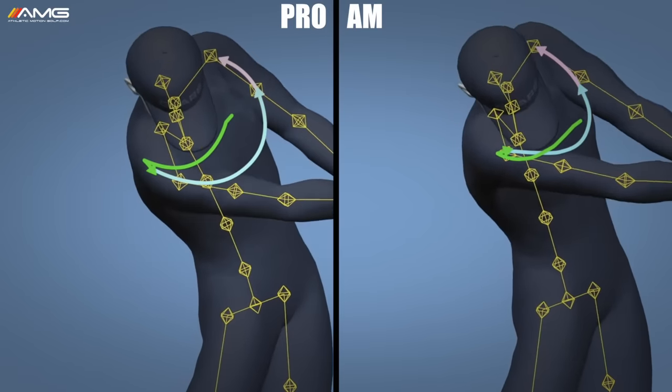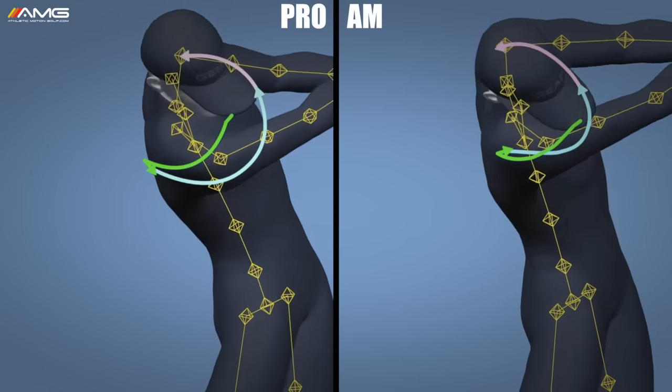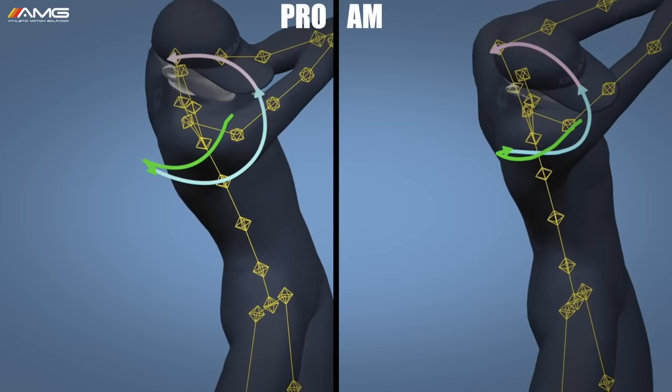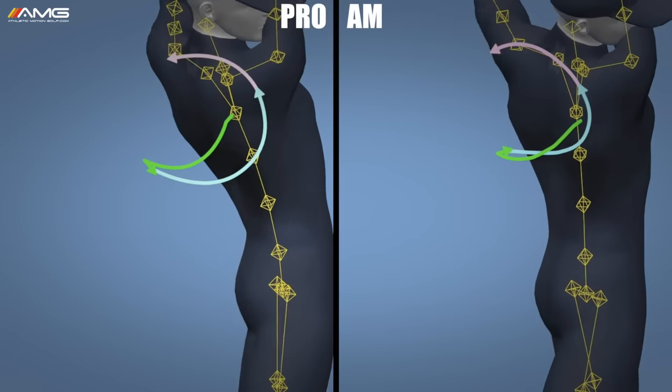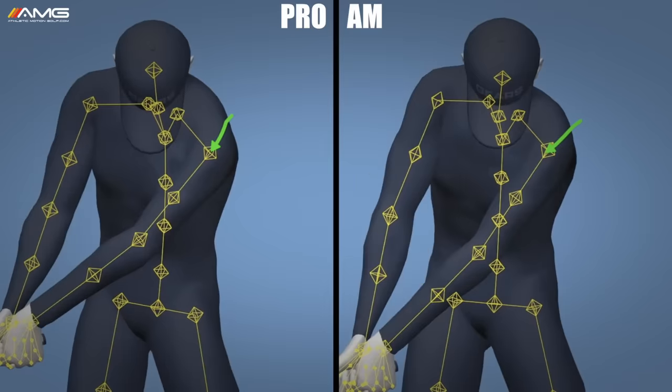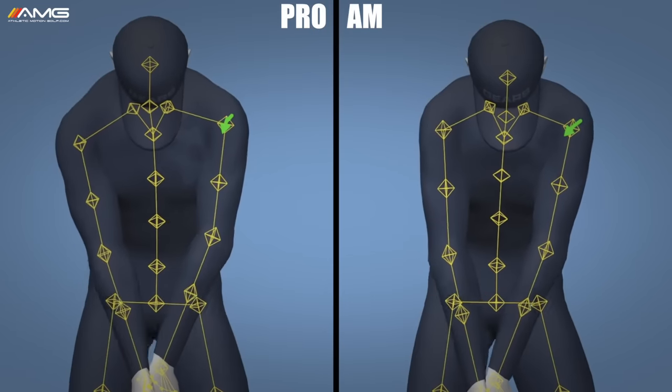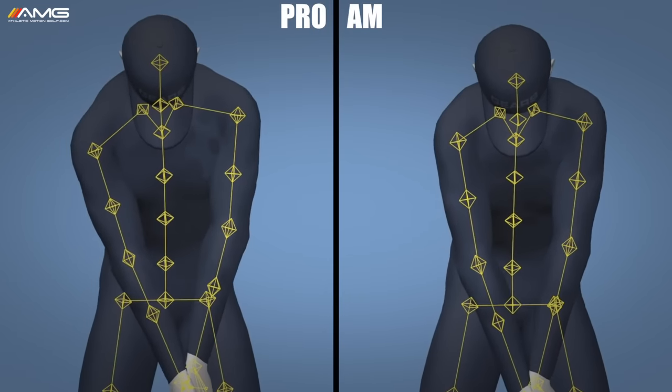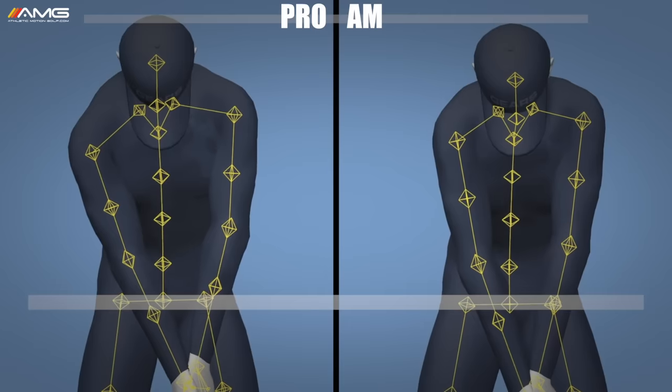Let's stop the swings right here and rewind them and take a deeper dive into what's causing things, what some of the differences are, and how we can use this information to make a better golf swing.